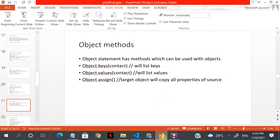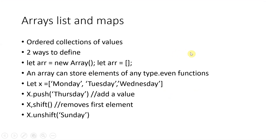Moving on, let's look at arrays. An array is an important ordered collection of values. There are two ways to define one: let array = new Array() or let array = []. Arrays can store elements of any type, even functions — you don't need to define a data type.